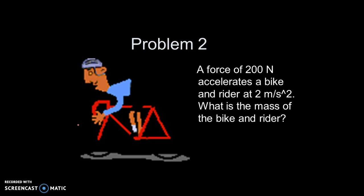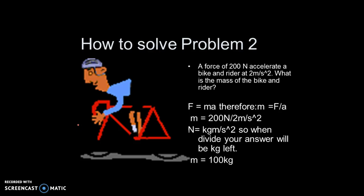Last but not another one. A force of 200 newtons accelerates a bike at 2 meters per second squared. What's the mass of the bike rider? Pause. Move on.